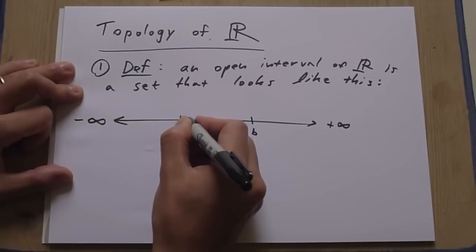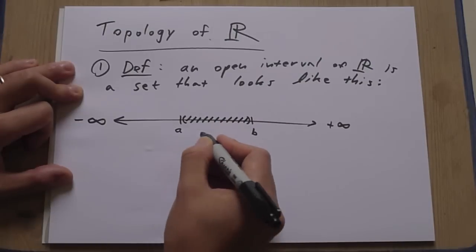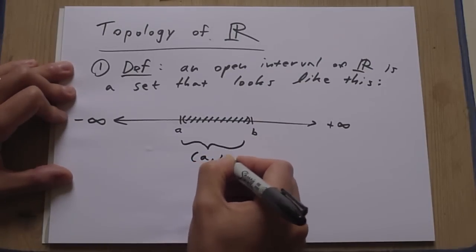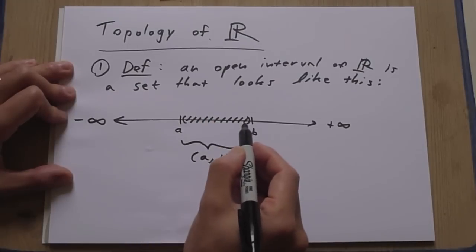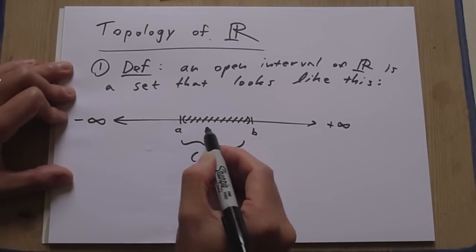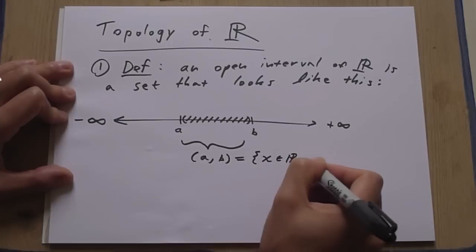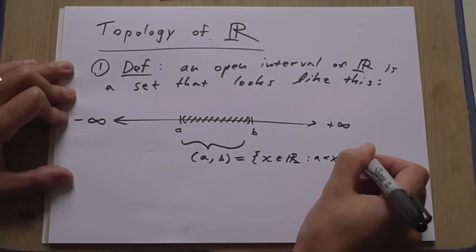And then you can consider the set of points on the interior. Okay. This thing is an open interval. And we denote it this way. And it's basically all the points from A to B that do not include A or B. So basically, all numbers such that X is less than B and greater than A.